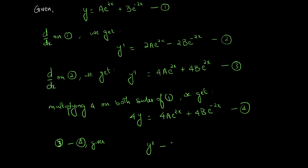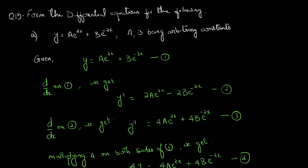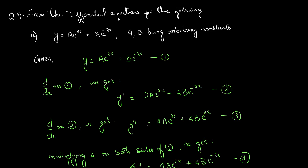So equation 3 minus equation 4 gives y double dash minus 4y equals 4a e raised to 2x plus 4b e raised to minus 2x minus 4a e raised to 2x minus 4b e raised to minus 2x, which equals 0. Therefore y double dash equals 4y. This is the required differential equation of second order for this question. This is the solution to part A.